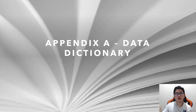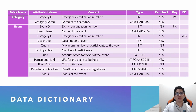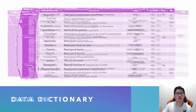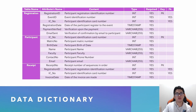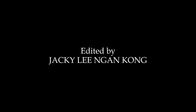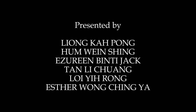The data dictionary of this project is shown in the table below. There is a table for category, event, registration, participant, and receipt, each provided with information from the data standpoint.